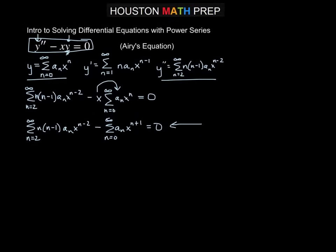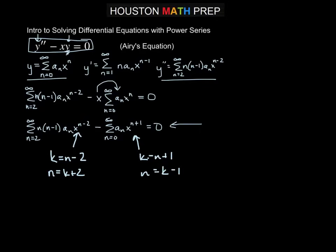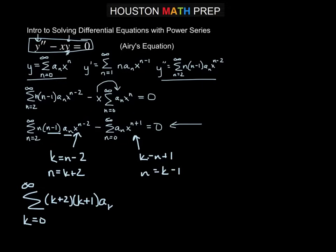To make the powers of x match, we use the substitution k equals n minus 2 for the first series, and k equals n plus 1 for the second. So n equals k plus 2 for the first, and n equals k minus 1 for the second. The first series becomes the sum from k equals 0 to infinity of k plus 2 times k plus 1 times a sub k plus 2 times x to the k.